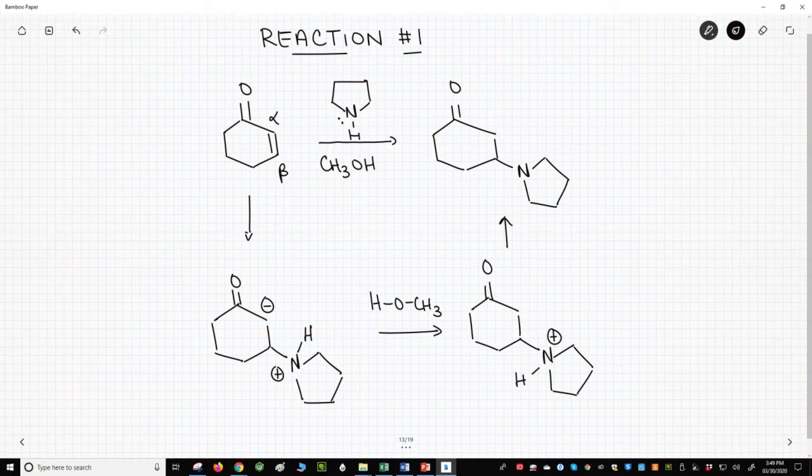The reaction starts with nitrogen attacking the beta-carbon. We can then protonate the enolate with the solvent methanol.